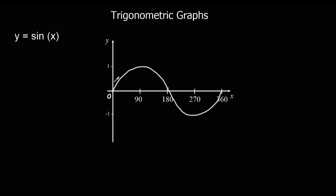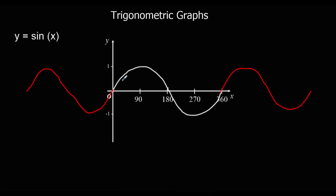This same pattern — this first 360 degrees — will repeat infinitely. The exact same pattern can just carry on and be drawn again for the next 360 degrees, or we could go backwards for the previous 360 degrees. So we're going to keep having this wave repeating forever — that pattern just repeats and repeats infinitely.